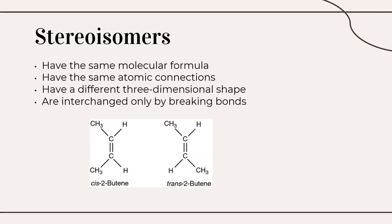For instance, we have these two stereoisomers: cis-2-butene and trans-2-butene. Stereoisomers like cis-2-butene exist as a result of hindered rotation about covalent bonds. They have the same molecular formula and the same atomic connections, but a three-dimensional shape which is different from each other, and they can only be interchanged by breaking these bonds.